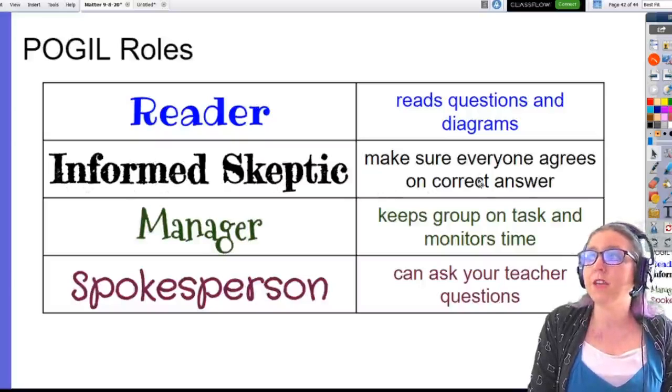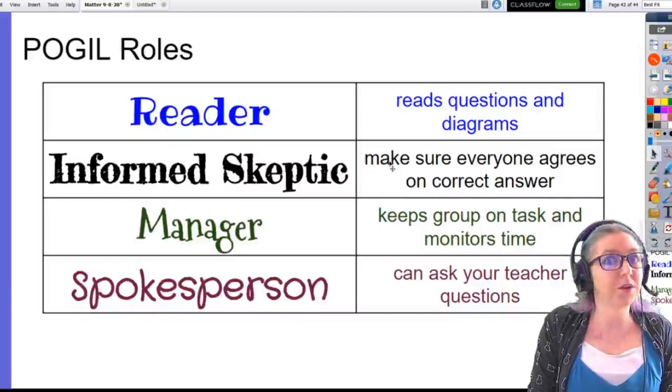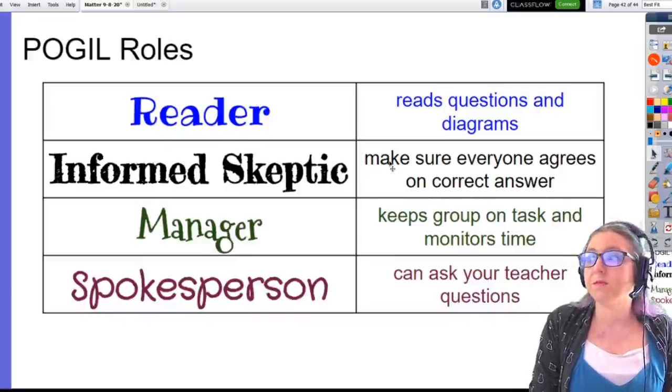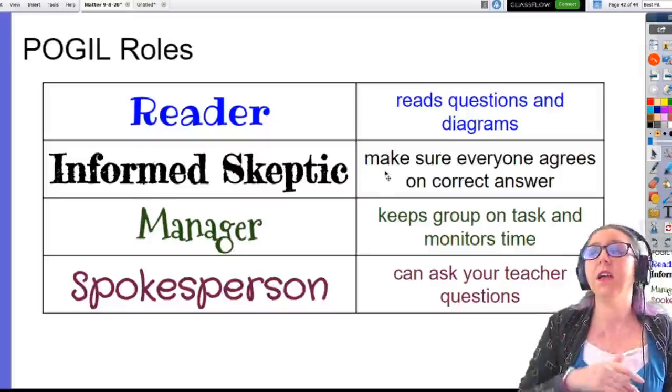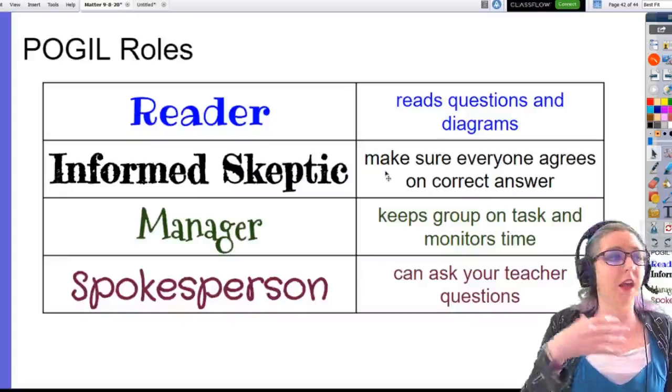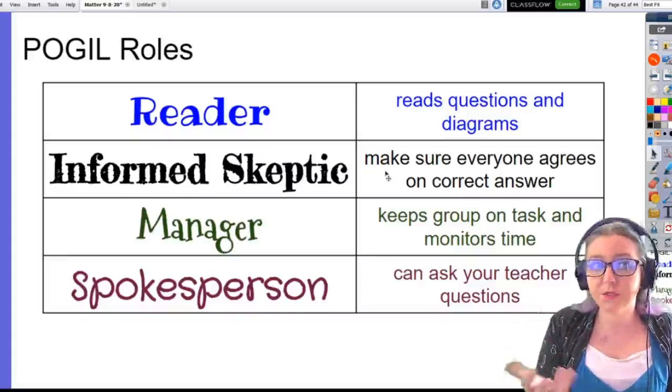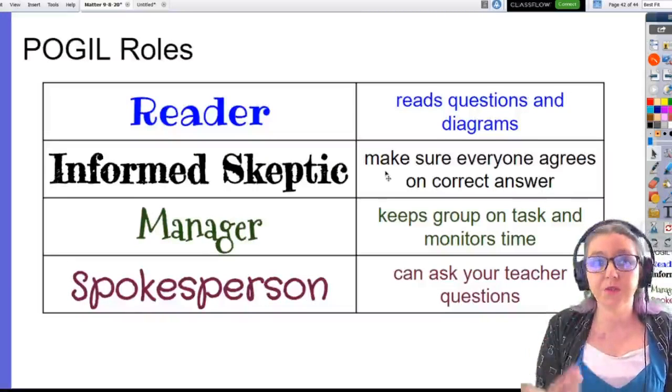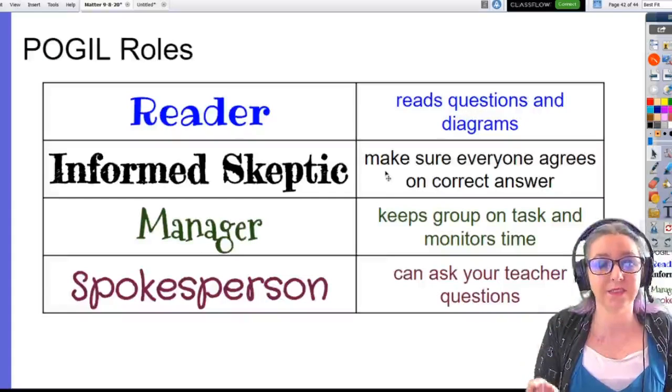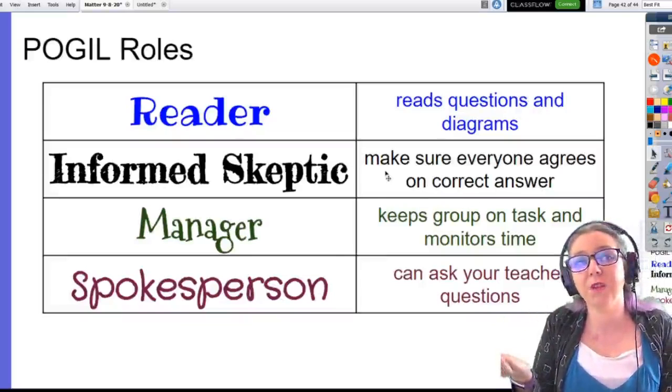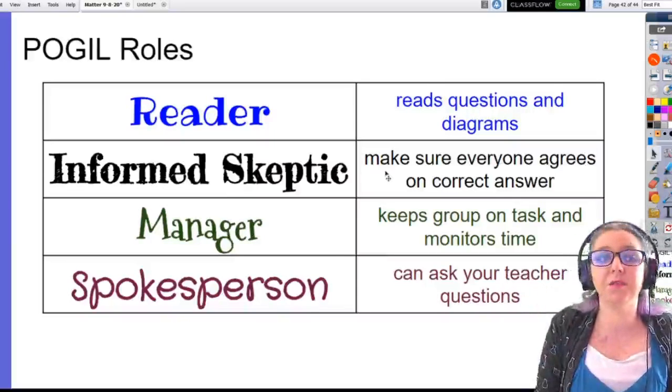Now, everyone might not all agree on the same answer. You should talk it through. If you all talk it through and you have a general agreement and everyone says the answer is two and one person says the answer is one, you say the answer is one, go with your gut. Put down what you think is the correct answer. But, if someone disagrees, make sure they have a chance to say it. Make sure there's a chance to discuss why they think the answer is one or why they think the answer is two. Make sure that dialogue takes place. That's the job of the informed skeptic.